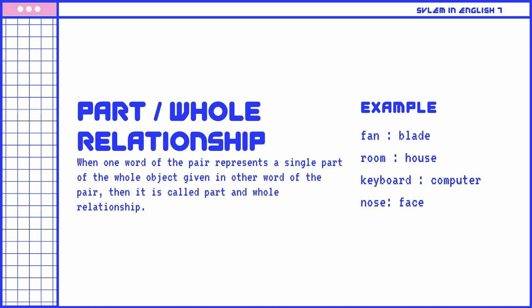Part-whole relationship: When one word of the pair represents a single part of the whole object given in the other word of the pair, then it is called a part-and-whole relationship. Examples: Fan is to blade. Room is to house. Keyboard is to computer. Nose is to face.